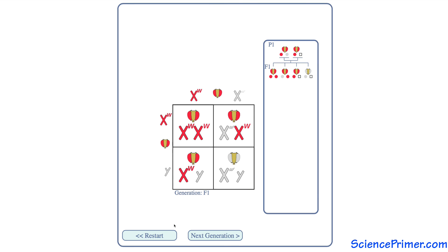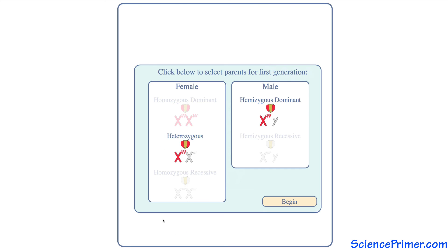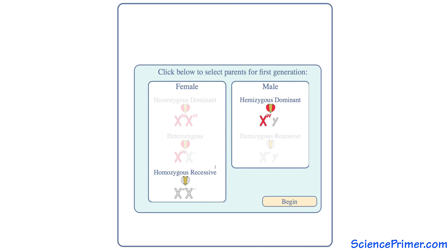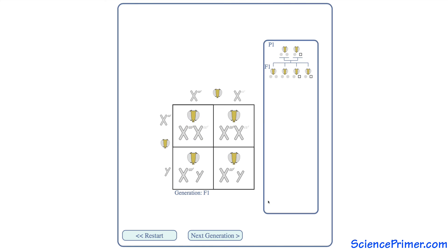Females expressing detrimental recessive traits like hemophilia are particularly rare because the only way for a female to be more than a carrier is for a female carrier to produce a daughter with an affected male. The extreme case of an affected female mating with an affected male produces 100% affected offspring.